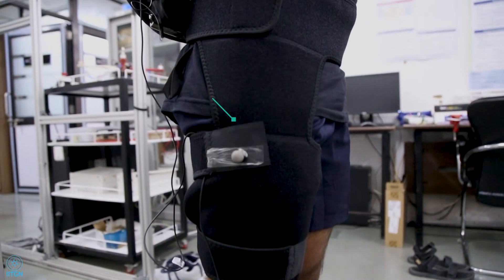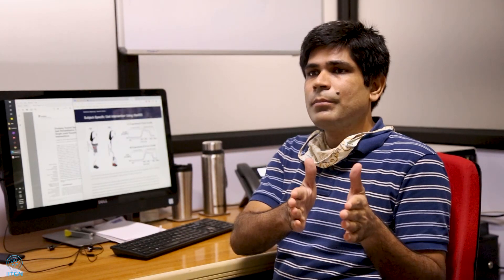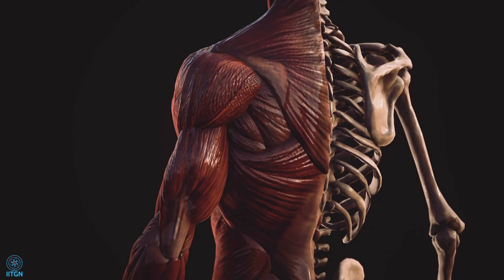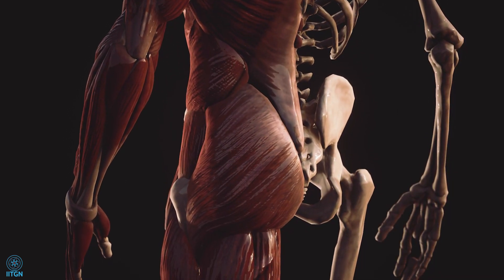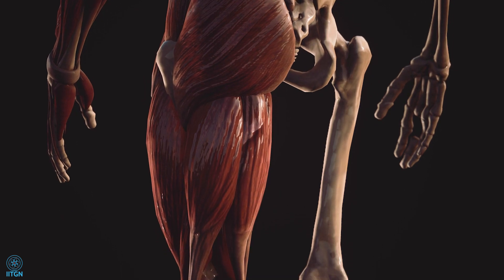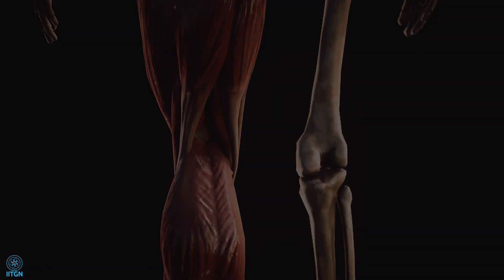In a way we can relate these with a biological system. Inside our arms and legs we have agonist and antagonist muscles that cause us to operate our bodies. The team conceptualized this exoskeleton based on a similar principle.